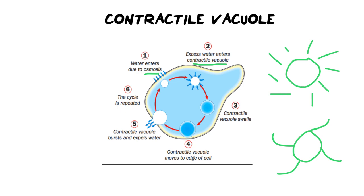Once we've filled the vacuole with enough water and it has swelled, we need to get rid of that excess water because if we leave it inside we run the risk of killing the cell. What happens is the vacuole, once filled, moves to the edge of the cell, and the thin membrane around the vacuole fuses with the cell membrane of the protist. All the excess water bursts out and is expelled into the surrounding environment. The vacuole then closes itself off and the whole process starts again — more water goes in and this happens over and over again.